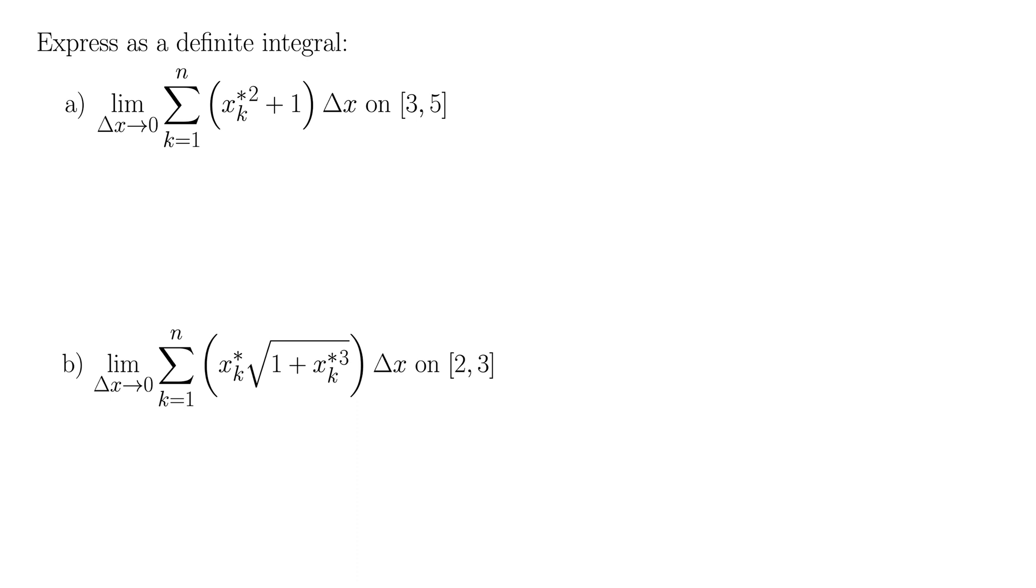Here we want to express these Riemann sums as definite integrals. So for part a we have the limit as delta x goes to 0 of the sum from k equals 1 to n